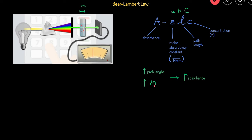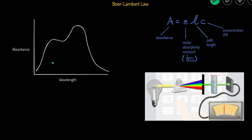Now let's look at common example problems for Beer's Law. One common problem is selecting the appropriate light to use in the absorbance experiment. The prism separates light into different colors and we select one wavelength. If we're given an absorbance versus wavelength graph, we always want to select the wavelength with the highest absorbance — look at the graph, find the highest peak, trace it down to get the wavelength. This maximizes absorbance and minimizes the concentration needed.